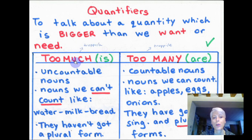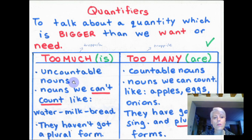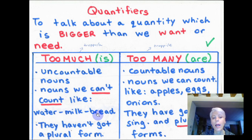We use 'too much' or 'too many'. 'Too much' is used for uncountable nouns. Let's revise what uncountable nouns are. Uncountable nouns are nouns we can't count, like water, milk and bread.